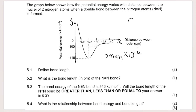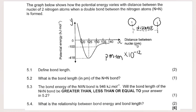This graph shows how the potential energy varies as I change the distance between the nuclei of two nitrogen atoms. When the atoms are very far apart, there's not much force of attraction between them. As they move closer and closer to one another, the potential energy starts to decrease.